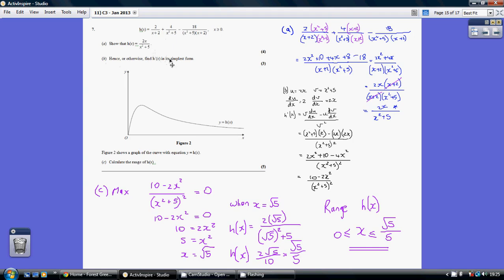Now hence or otherwise differentiate this. Remember h dash x means the differential of h of x. We've got a division here, so we're going to use the quotient rule. Our numerator becomes u equals 2x, and v, our denominator of x squared plus 5.